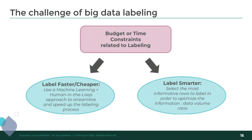You have two ways to approach this: label faster using a machine learning algorithm with a human-in-the-loop approach to fix inaccuracies, since no machine learning model is ever perfect. Or you can label smarter — making the claim that you need really high quality data that's perfect for your use case, but you don't necessarily need a huge amount of data. Instead of labeling everything, you just label the particular data points that you know are going to be critical for training your model well.